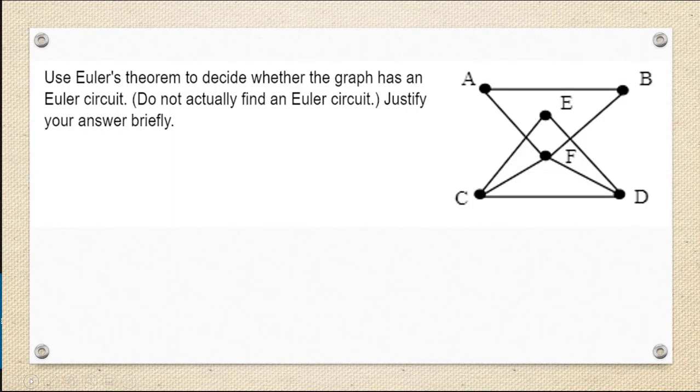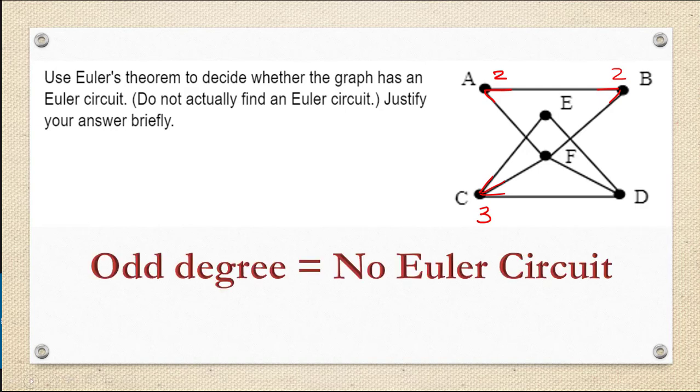Let's use Euler's theorem to decide whether the graph here has an Euler circuit. You don't actually have to find an Euler circuit. You just have to determine if the vertices have even degree. So degree of vertex A is two. The degree of vertex B is two. The degree of vertex C, however, is three. You can actually stop right there, because if there's even one vertex of odd degree, then you know that there's no Euler circuit.